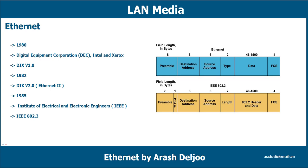In 1980, Digital Equipment Corporation (DEC), Intel, and Xerox published the DIX version 1.0 standard, which boosted the speed of Ethernet to 10 megabits per second while maintaining Ethernet's thick trunk cabling scheme.